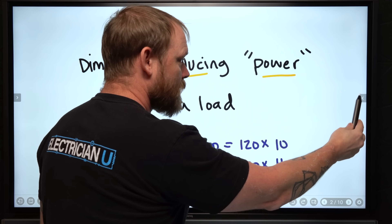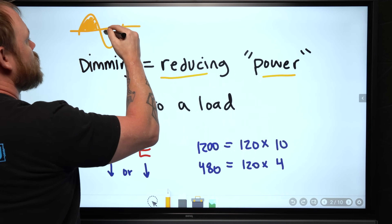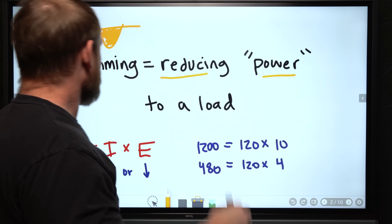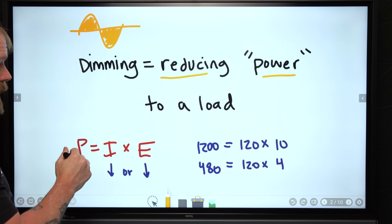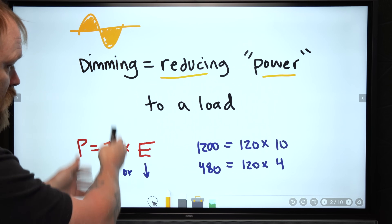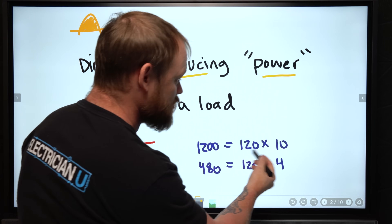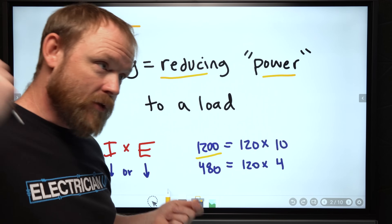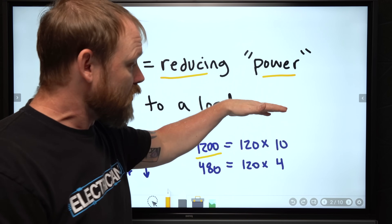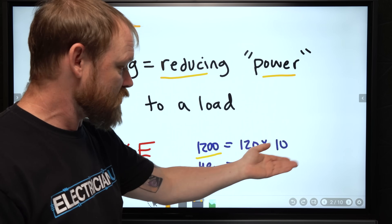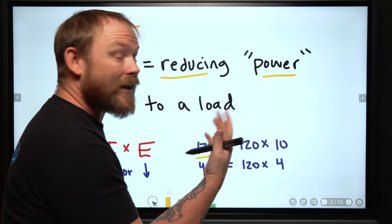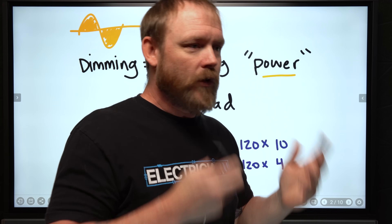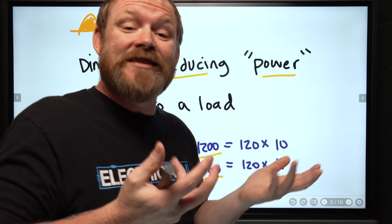To first think about what dimming is: it's just reducing power. We have a sine wave and everything under the curve represents the amount of power being transferred to the load. When we reduce power, we limit that amount. If we change current or voltage, we get a different power output. 120 volts times 10 amps gives 1200 watts. If we lower the current to 4 amps, we get 480 watts - less power being consumed. That's the essence of dimming.